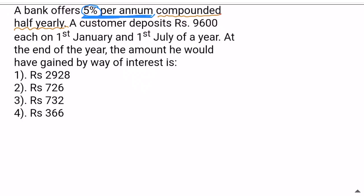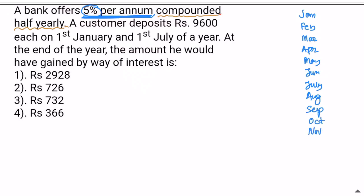Let's say this is January, February, March, April, May, June, July, August, September, October, November, December. The bank offers over 5% per annum compounded over time.